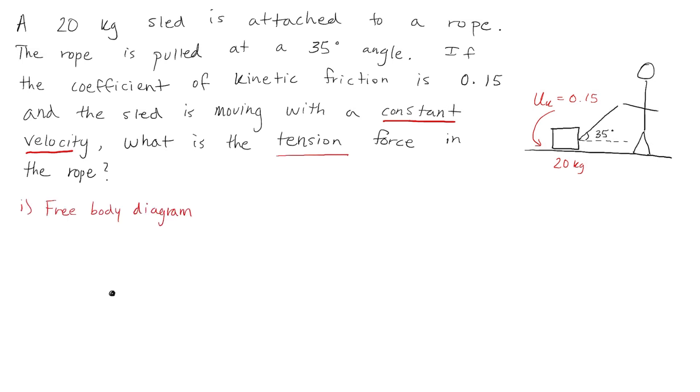I always start by drawing a free body diagram. We have the tension force, which is at a 35 degree angle. We have some kinetic friction between the sled and the surface. We have the force of gravity pushing down on the sled, and the normal force, which represents the surface pushing back up against the sled.